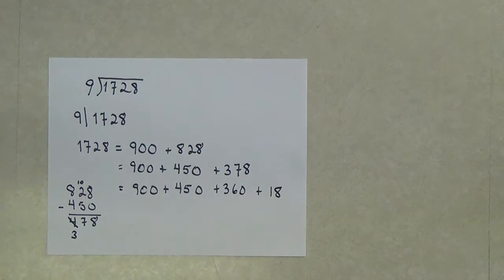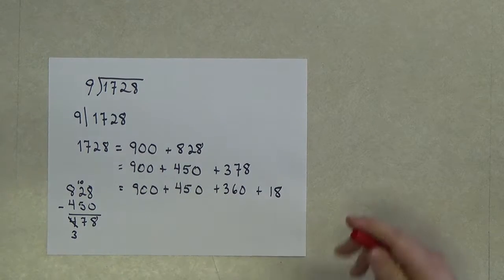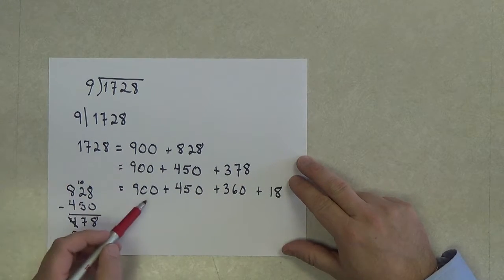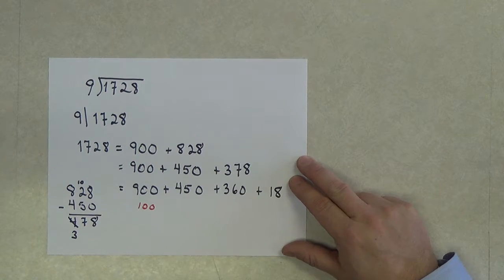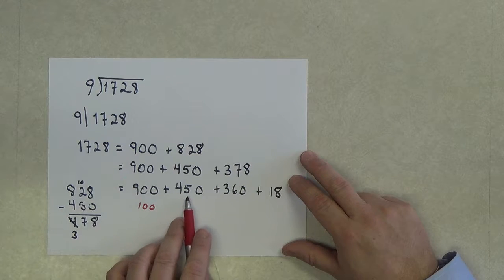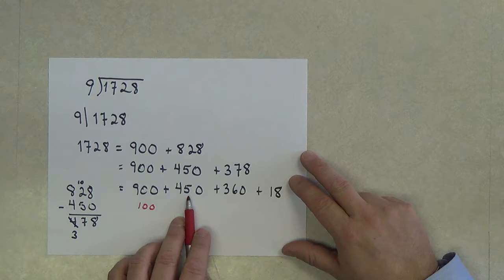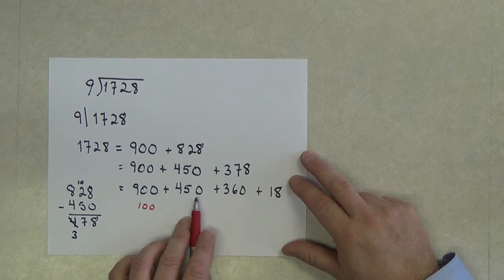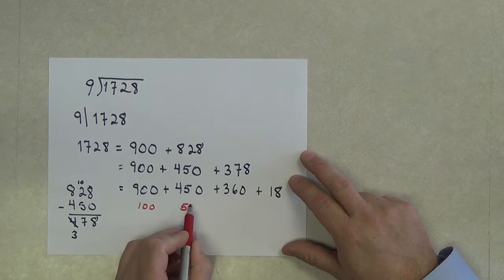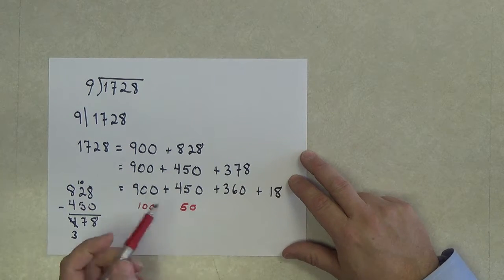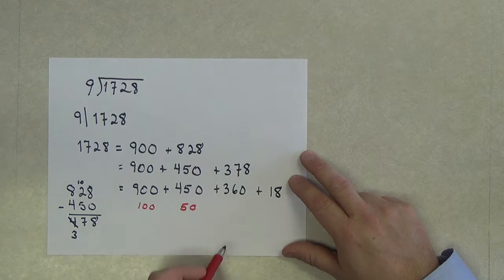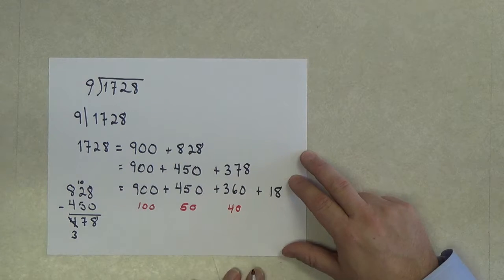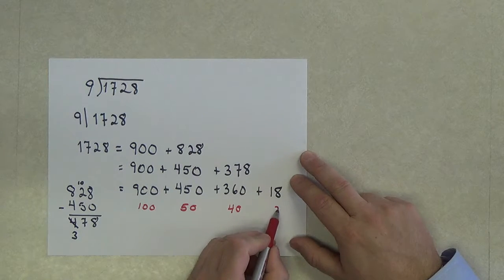Now, to me, the neat part of this is what I can do with this. Well, how many 9's are in 900? There are 100 of them. And we said that 9 divided into 45 5 times, and this is 10 more than that, so this is 50. We know that 9 divides into 36 4 times, and this is 10 times that, so that's 40. And 9 divides into 18 twice.